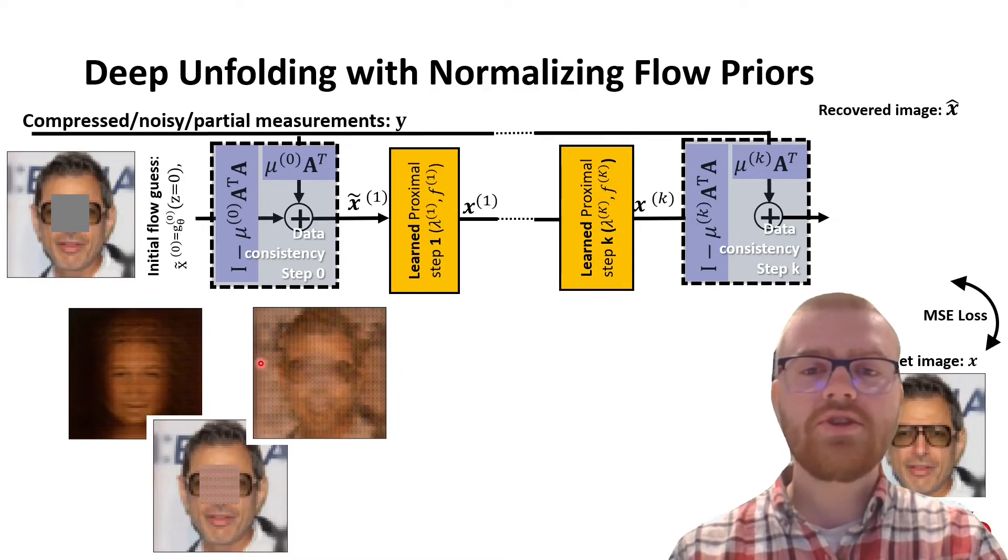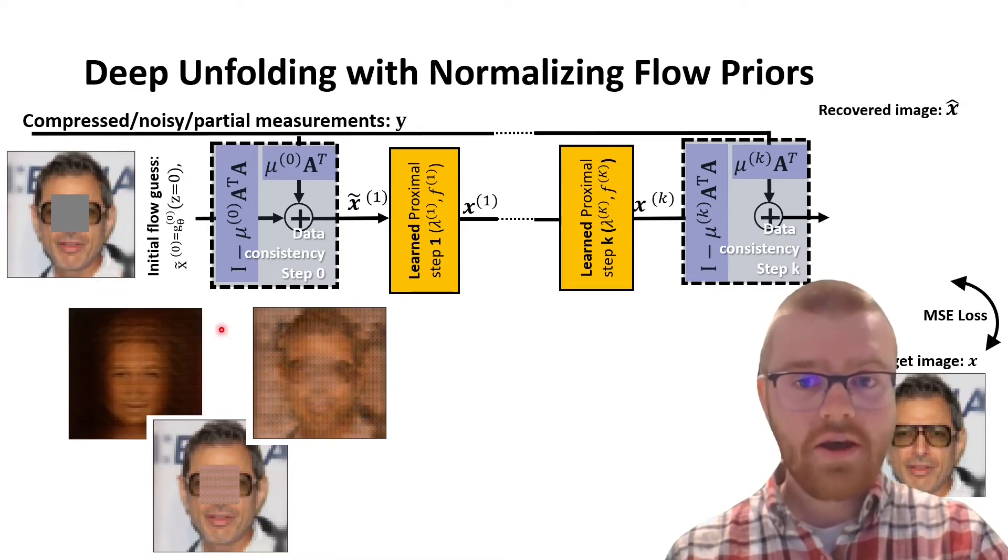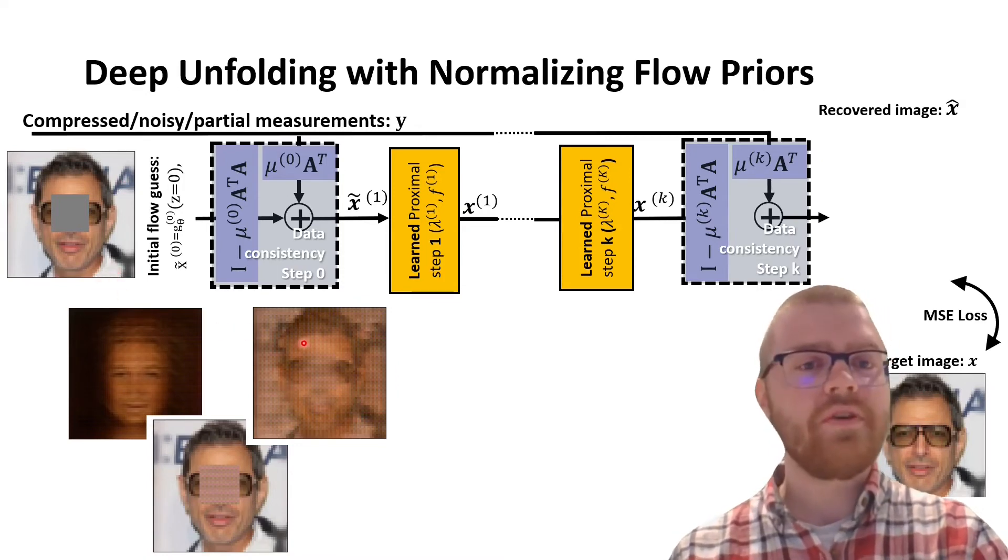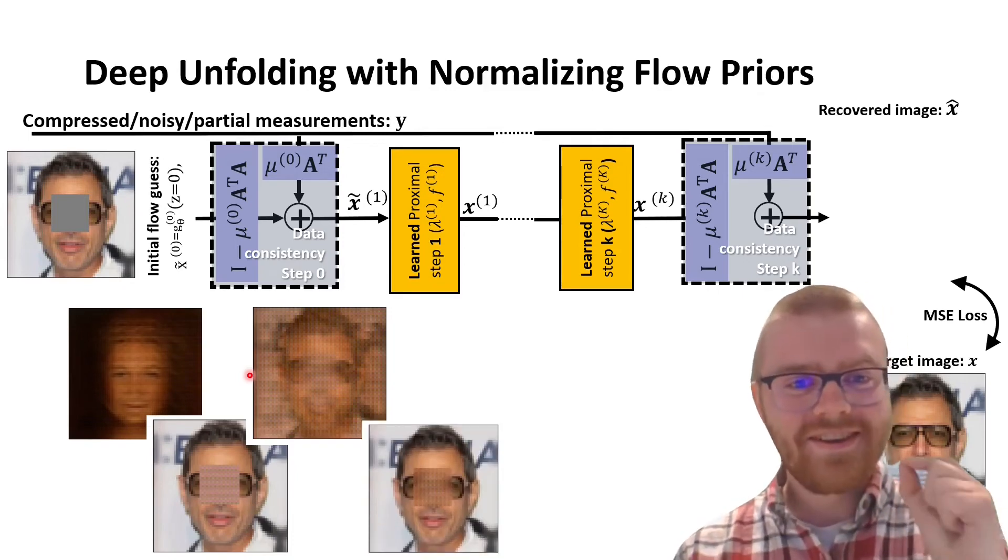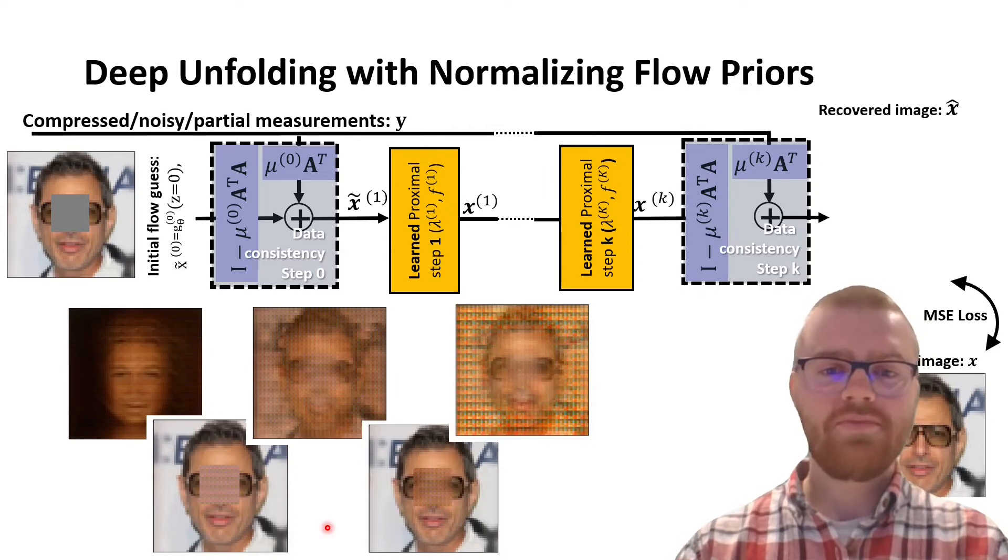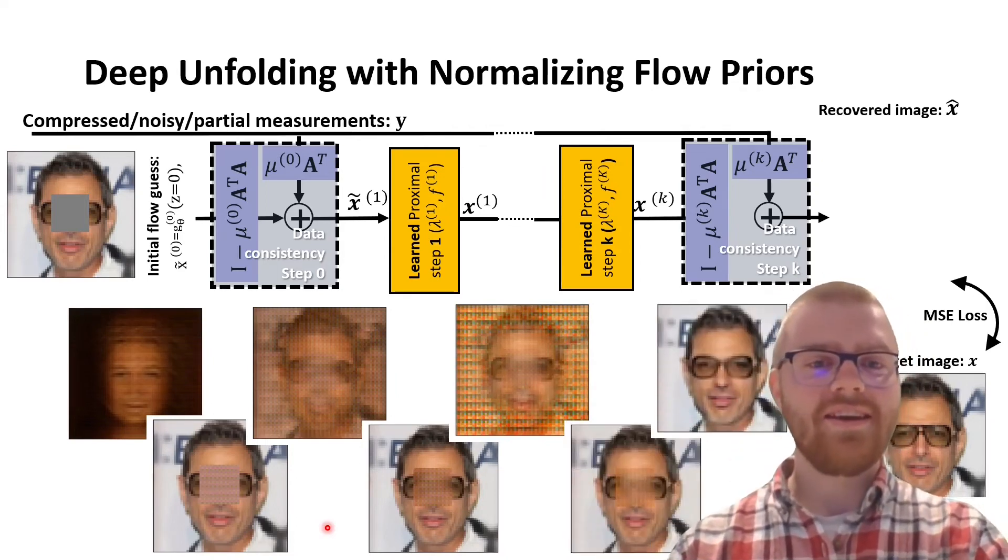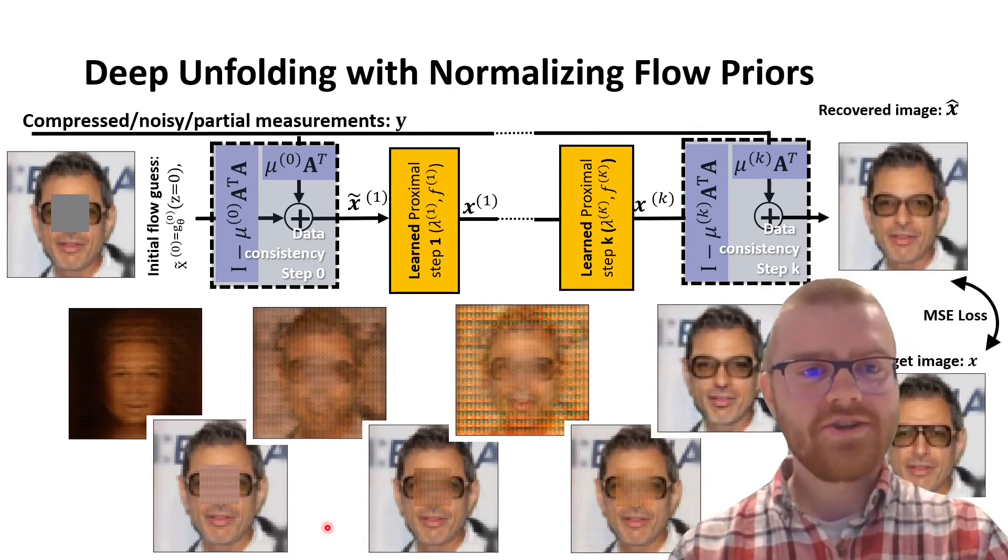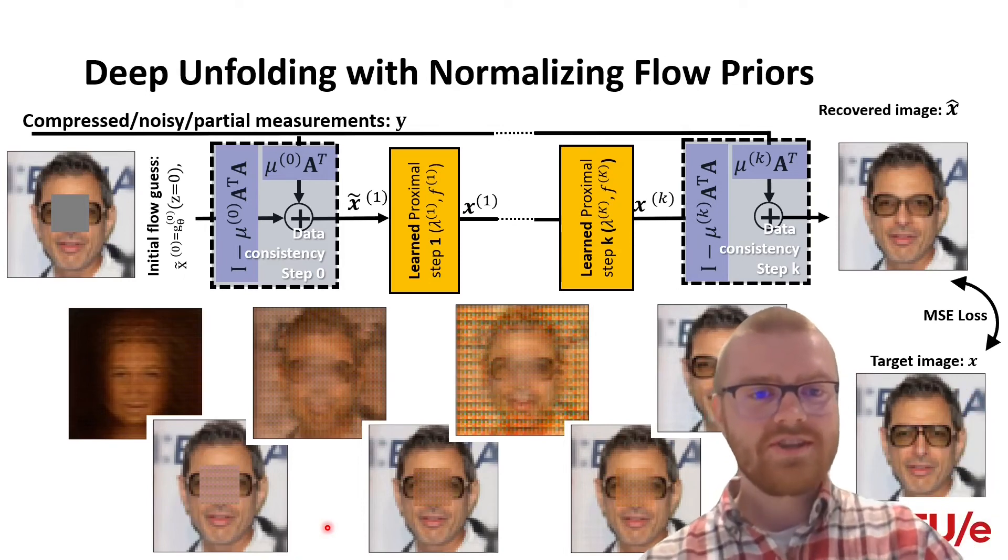And then we do a step of flow, so we come closer to a more likely solution. But as you can see, the surrounding parts of the image, which we have actually measured, so we actually know what's going on there, we have reconstructed something different. So we do a data consistency step to make sure that it gets back to what it's supposed to be. So, now we see that this outside is back to being normal again. And then we do again a proximal operator with a step of flow, data consistency, and again a step of flow. And as you can see, we then get a very nice recovered image here on the top, which looks almost similar to our target image X.